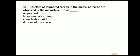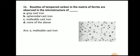Next question: Rosettes of tempered carbon in the matrix of ferrite are observed in the microstructure of? The answer is malleable cast iron. Here you can see the rosettes of tempered carbon, where the matrix is ferrite and the carbon is present in the form of rosettes.